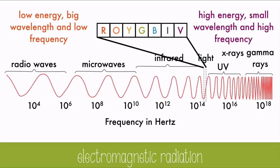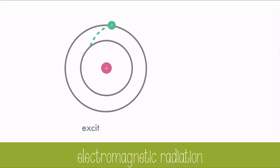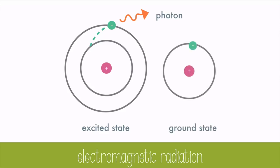The electromagnetic spectrum includes slow, big radio waves on one end and high-energy, high-frequency gamma waves at the other. Visible light makes up only a tiny portion of the spectrum, including all colors: red, orange, yellow, green, blue, indigo, and violet. Light toward the red end has lower energy, bigger wavelengths, and lower frequency, while light toward the violet end has high energy, small wavelengths, and high frequency. When light strikes an electron, it gets excited and jumps to a higher energy level.